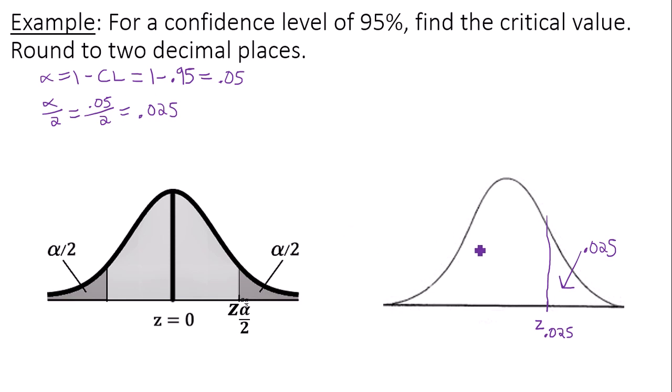Whenever I try to find out what this critical value or data value is, I need to know the area to the left. If the area to the right is 0.025, the area to the left is 1 minus 0.025, which is 0.975.